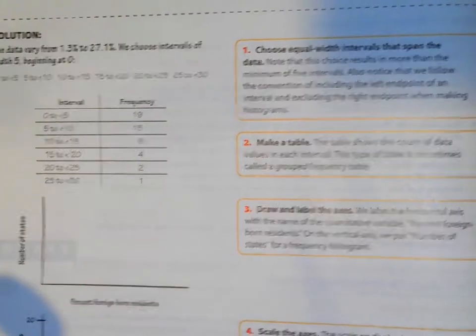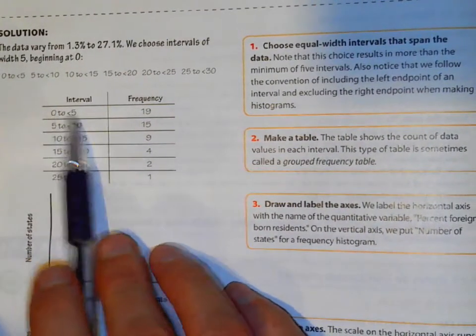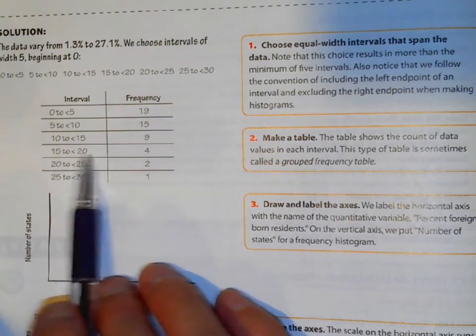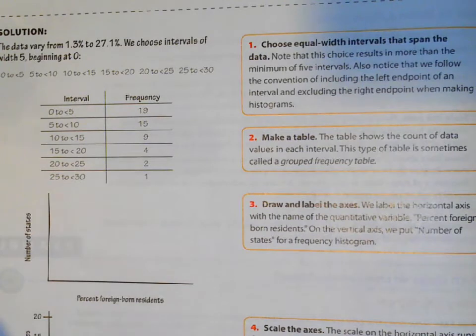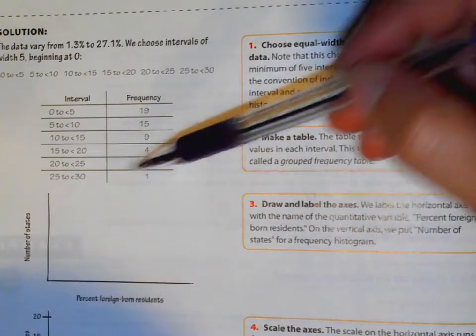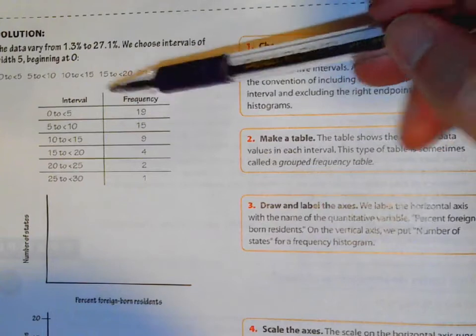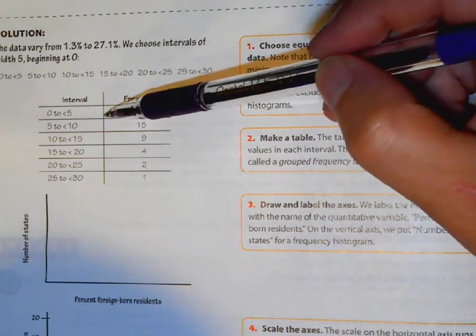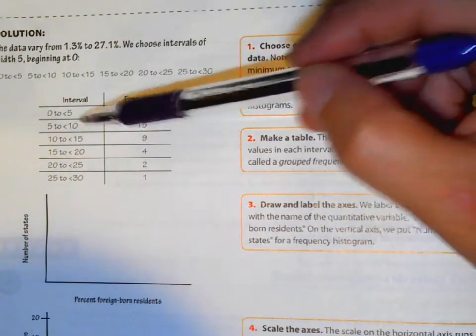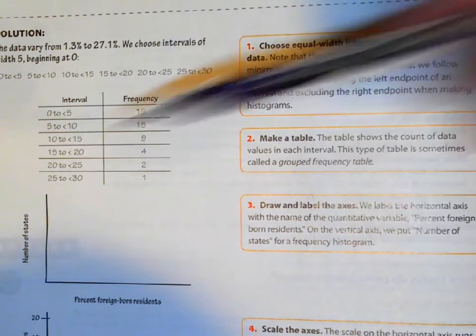So what we're going to do is we're going to create a histogram for that. They're going to make your intervals. So 0 to 5, 5 to 10, 10 to 15, 15 to 20, 20 to 25, 25 to 30. California was at 27.1, so we have to go up to about 30. So 5 would not be included in this one. But if something was exactly 5%, you would include it here. If something was exactly 10, you would include it down here.